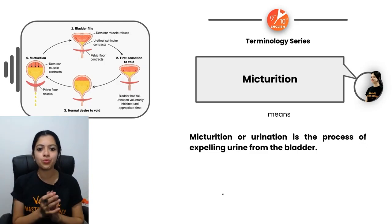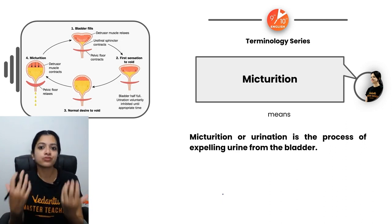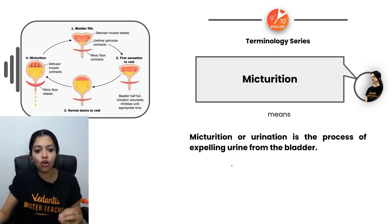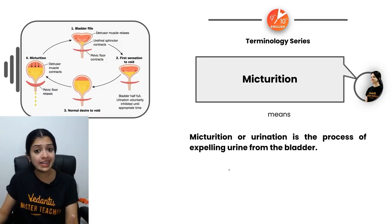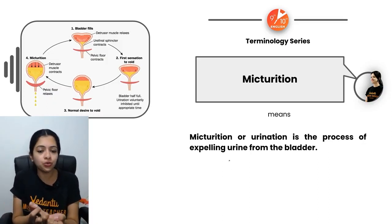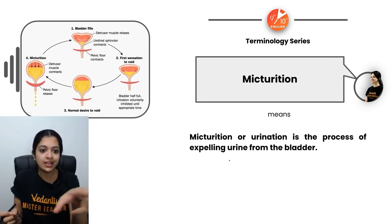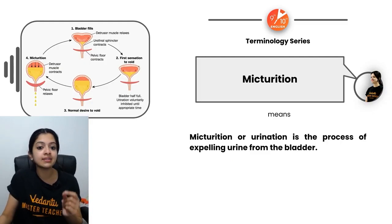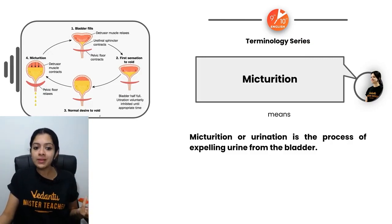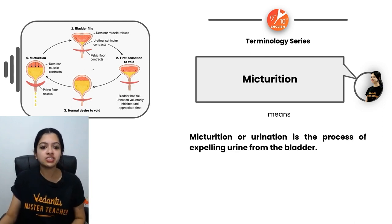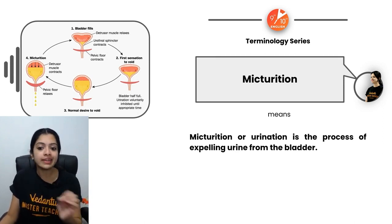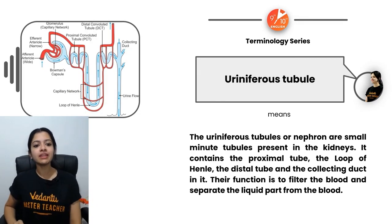Micturition is simply the active process of urination — the process of expelling urine from the bladder. Sphincter muscles play a major role in micturition, holding urine until the urinary bladder fully expands. The stages go from bladder filling, to first sensation to void when approximately half full, then the normal desire to void, and finally micturition.